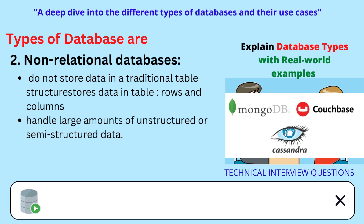MongoDB is a non-relational database used by many organizations to store and manage data for various applications. It is used to support flexible data modeling and handle data that is not structured in a traditional, relational manner.